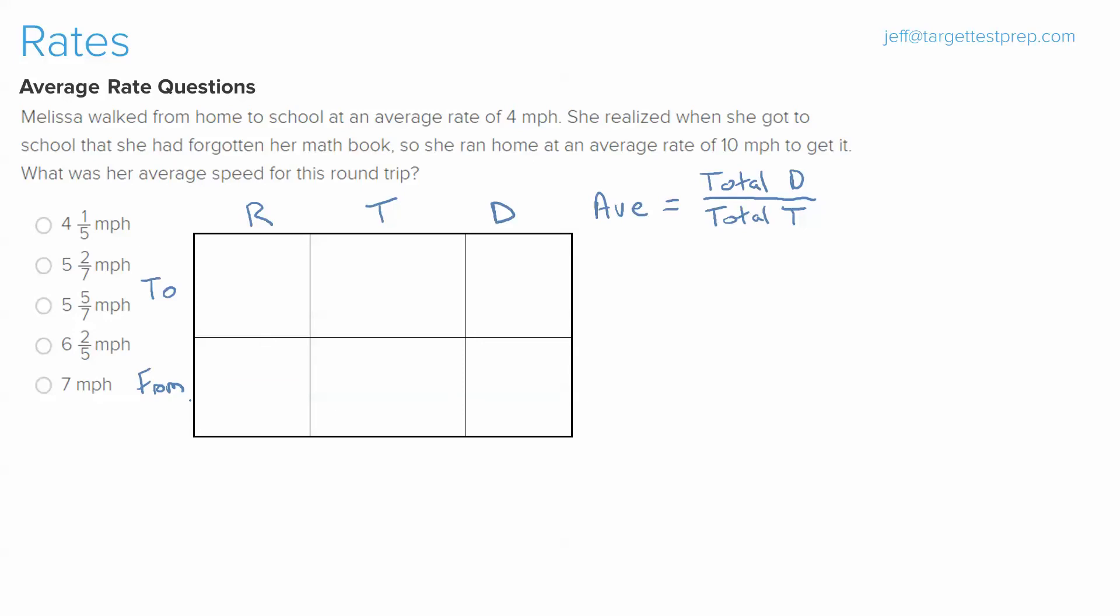So first and foremost, we know that her rate going to school was 4 miles per hour. We know that her rate going from school was 10 miles per hour. Now as you scan the question, you may be thinking to yourself, well I don't see any more information to plug in to deal with our chart.